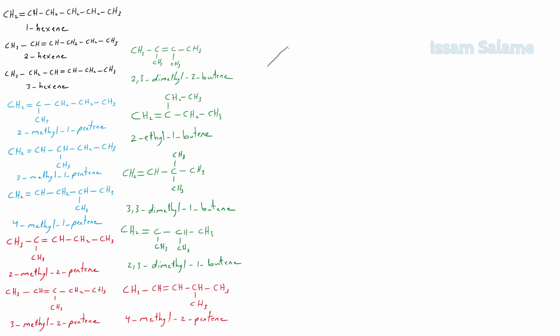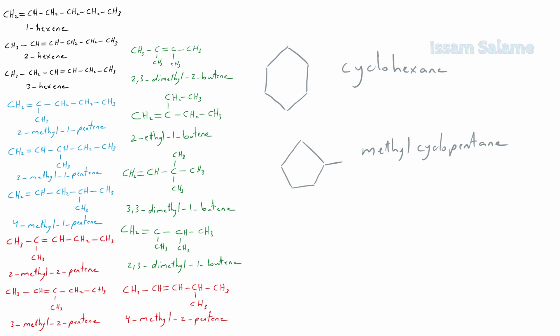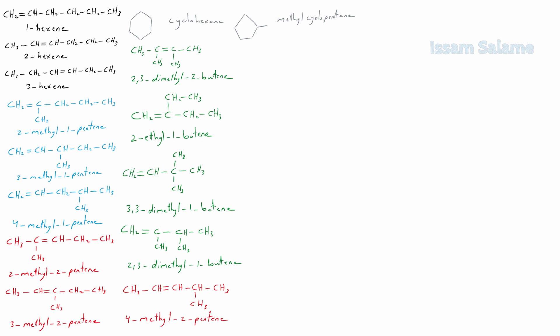I'll start with the six carbon atom ring, which is called cyclohexane. Then we can draw a five carbon atom ring with a methyl group, called methylcyclopentane. Now let's start drawing isomers based on a cyclobutane — a four carbon atom ring.